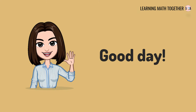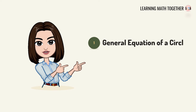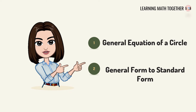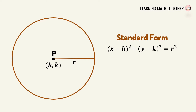Good day everyone. In this video we will tackle the general equation of a circle and how to rewrite the equation of a circle from general form to standard form. In the previous discussion I introduced the standard form of the equation of a circle: (x minus h) squared plus (y minus k) squared equals r squared. The standard form is also called the center-radius form because it is the form where we can easily get the center and radius of a circle.